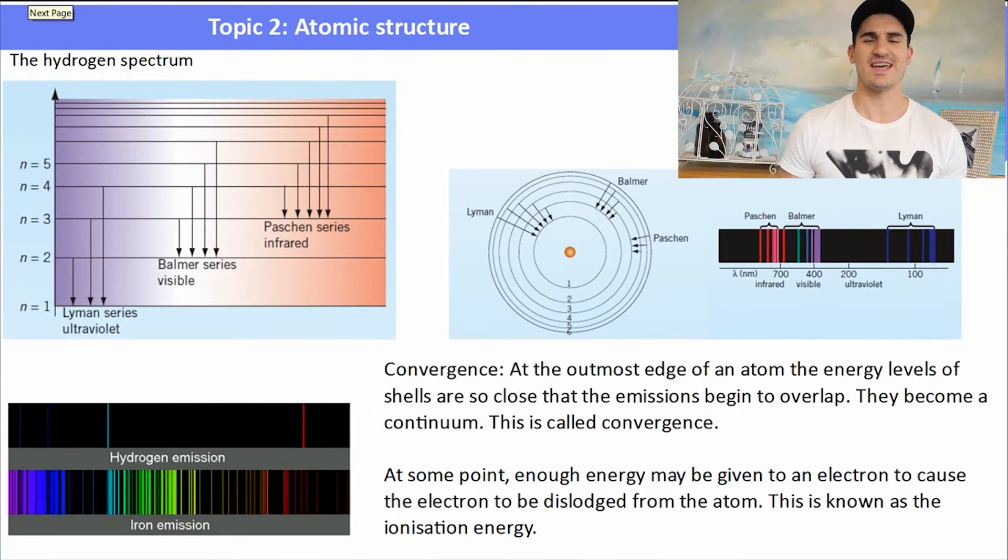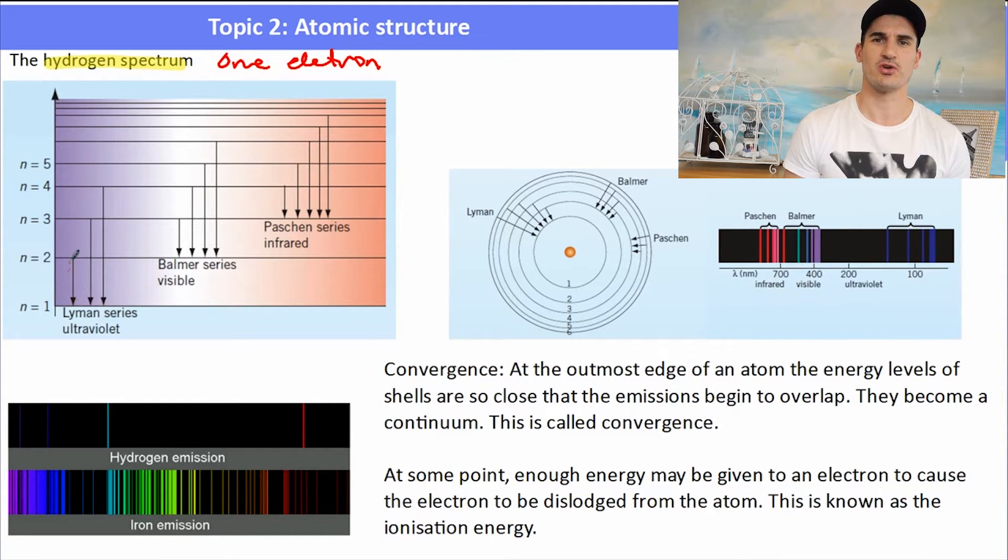The hydrogen spectrum. Hydrogen was the easiest to observe because it only had one electron. Any electron in the hydrogen atom that returns to the first shell will be found in the ultraviolet region, which is known as the Lyman series. Those have the highest amount of energy because there's the biggest gap between the shells. Any electron returning to the second shell can be found in the visible region of the spectrum. That's known as the Balmer series. And any electron that returns to the third electron shell is known as the Paschen series, which is the infrared.